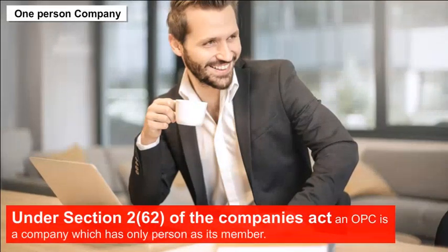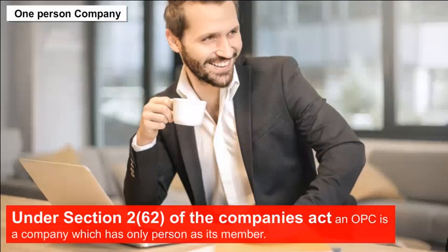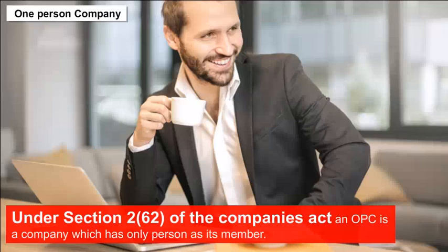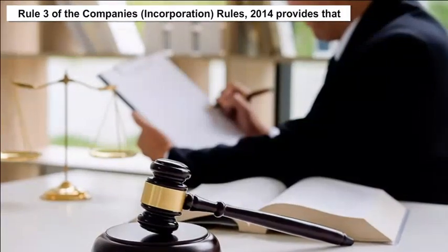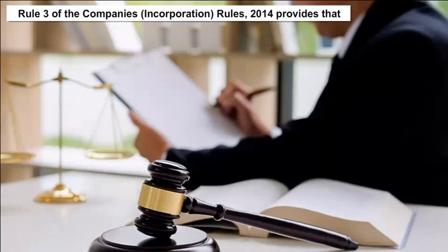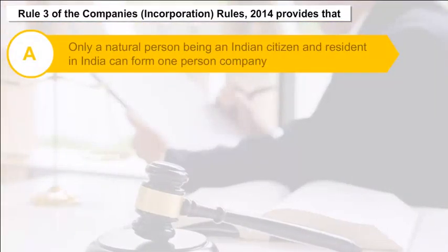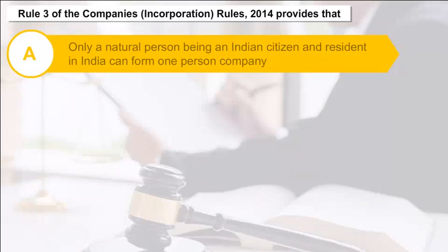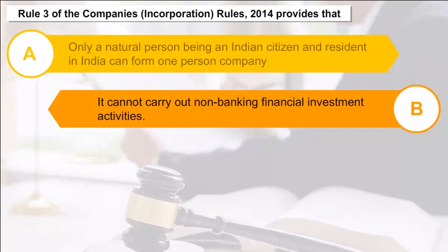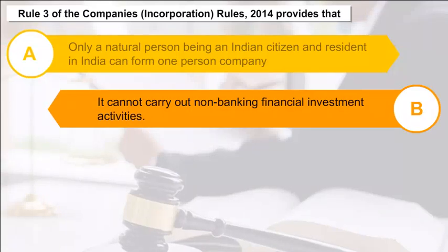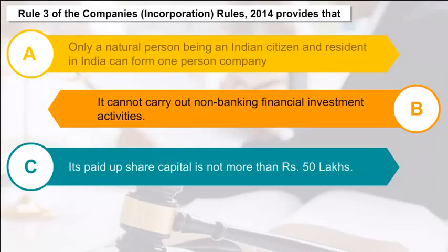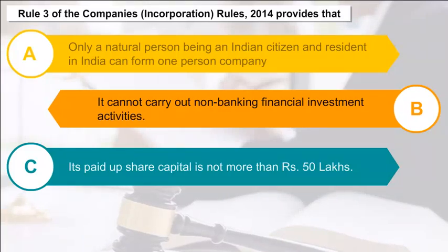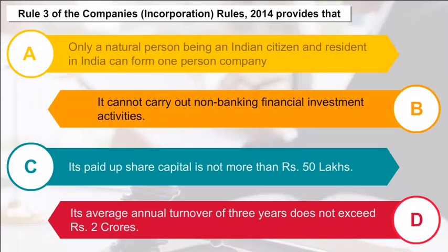One Person Company (OPC): Under section 262 of the Companies Act, an OPC is a company which has only one person as its member. Rule 3 of the Companies Incorporation Rules 2014 provides that only a natural person being an Indian citizen and resident in India can form an OPC. It cannot carry out non-banking financial investment activities, its paid-up share capital must not exceed 50 lakh rupees, and its average annual turnover of 3 years must not exceed 2 crores rupees.